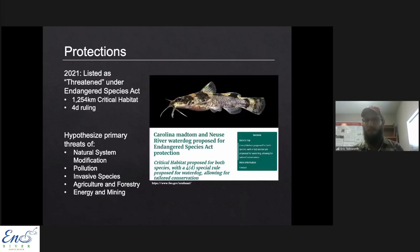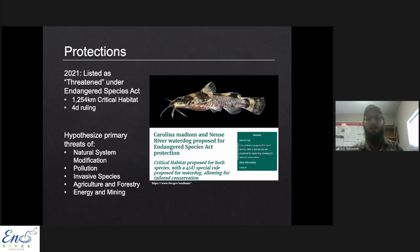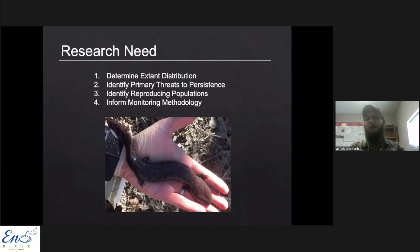With the threatened listing, 1,200 kilometers of stream miles of critical habitat has been designated, with almost the entirety of the Eno River designated as critical habitat for the Neuse River water dog. The Fish and Wildlife Service identified primary threats to water dog survival as natural system modification, development, changes to hydrology through dam creation, pollution, invasive species, agriculture, forestry, and energy and mining - basically anything that could negatively impact our waterways.